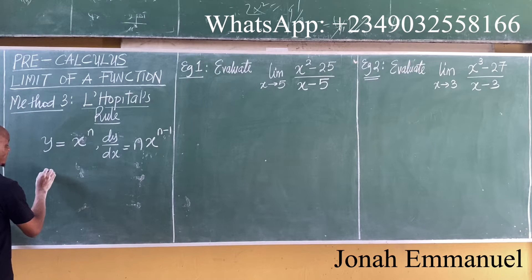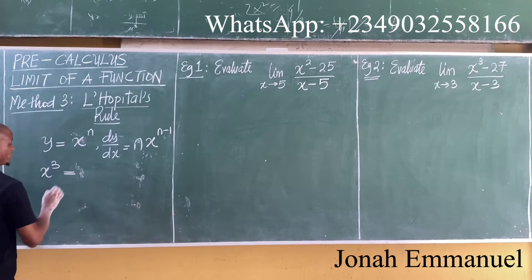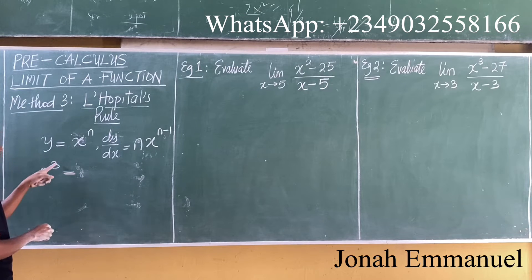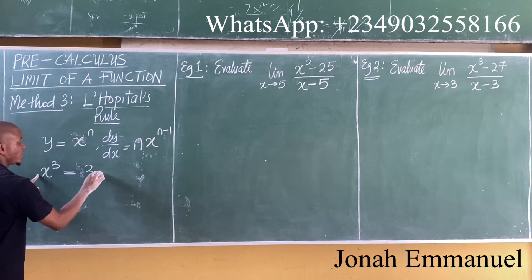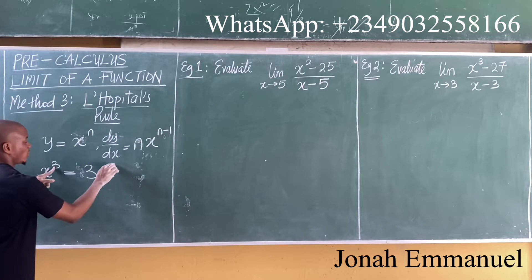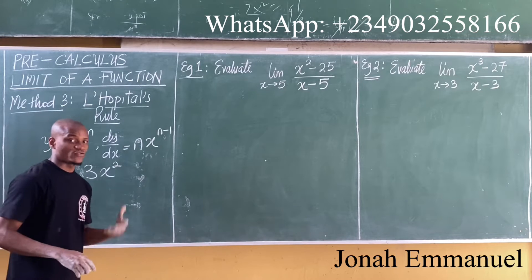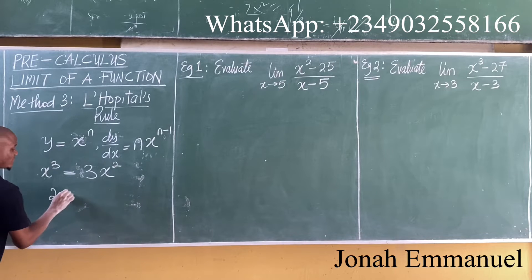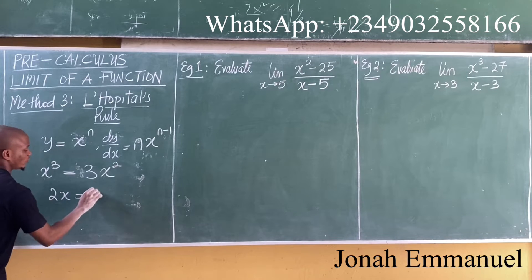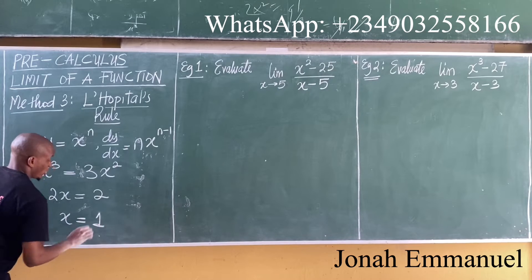For example, if I differentiate x cubed, the power 3 comes down, giving 3 times x to the power 2, so I get 3x squared. In the same way, if I differentiate 2x, this gives you 2. If I differentiate x, this gives you 1.